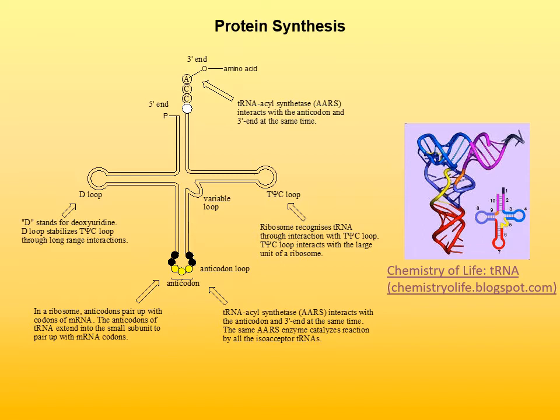A bacterial cell contains about 30 to 40 different transport RNAs, while a mammalian cell can have as many as 150. This means that different transport RNAs can bear the same amino acid but have different anticodons. Such transport RNAs are called isoacceptor transport RNAs.